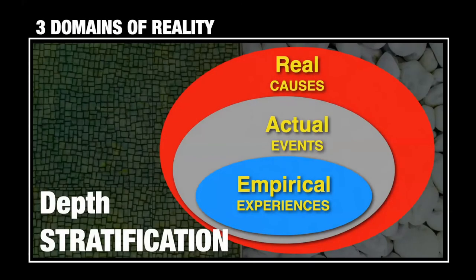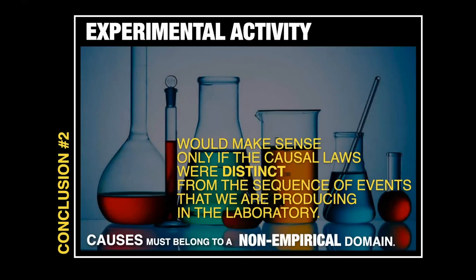In summary, the three domains of reality are the empirical, the actual, and the real. This is the concept of depth stratification of critical realism. The second conclusion is that experimental activity would make sense only if the causal laws were distinct from the sequence of events produced in the laboratory. In short, causes must belong to a non-empirical domain — to the domain of the real. It's not the condition, it's the cause.